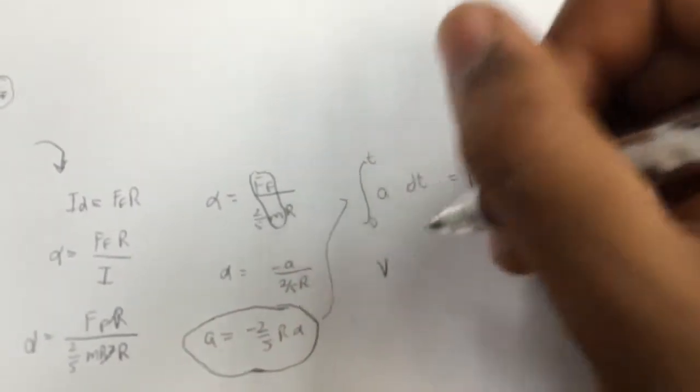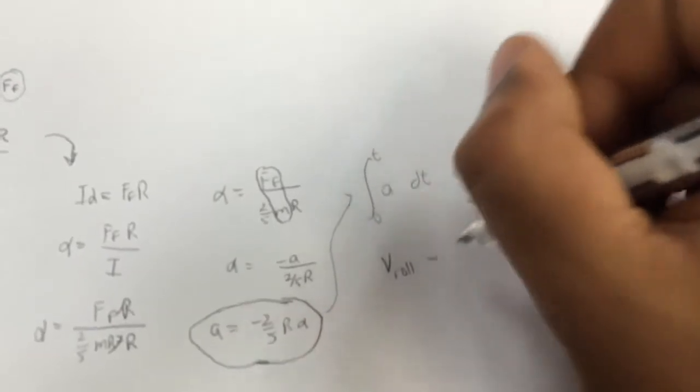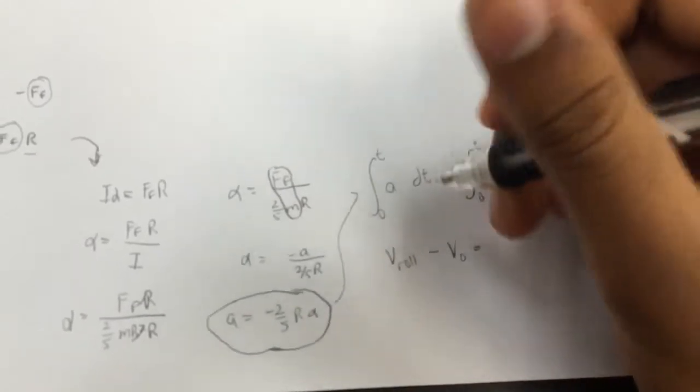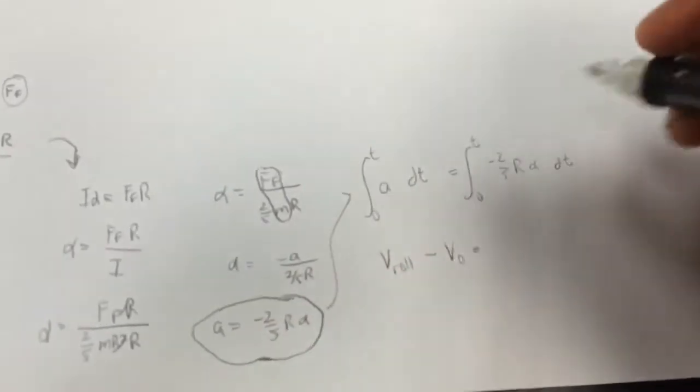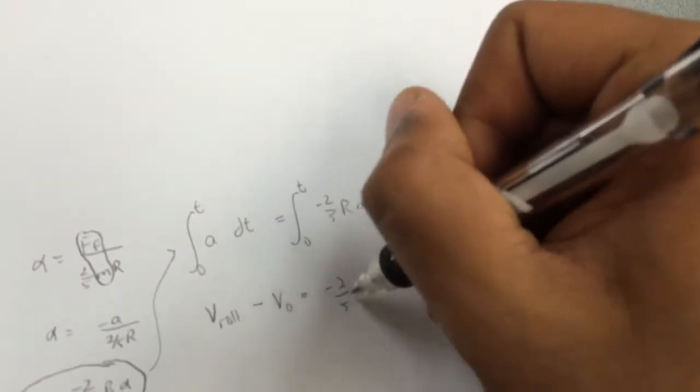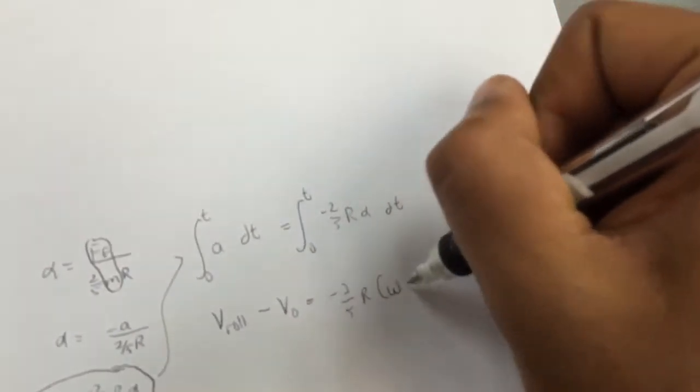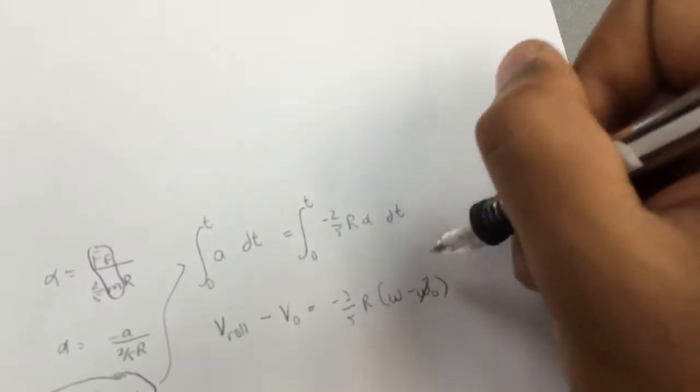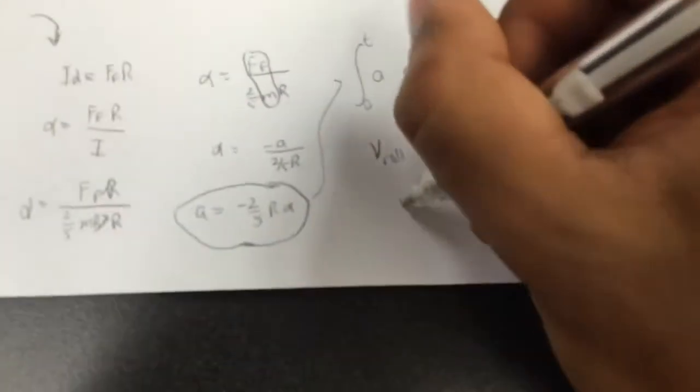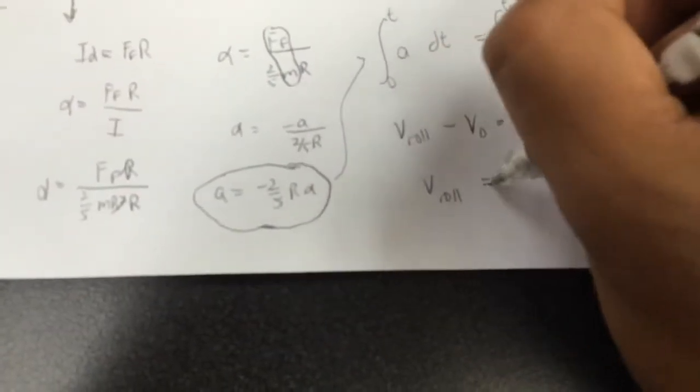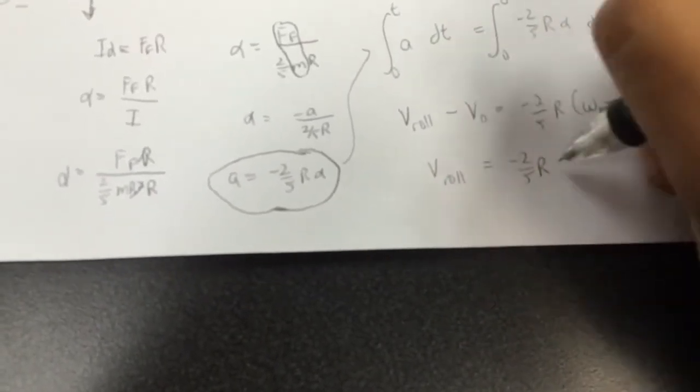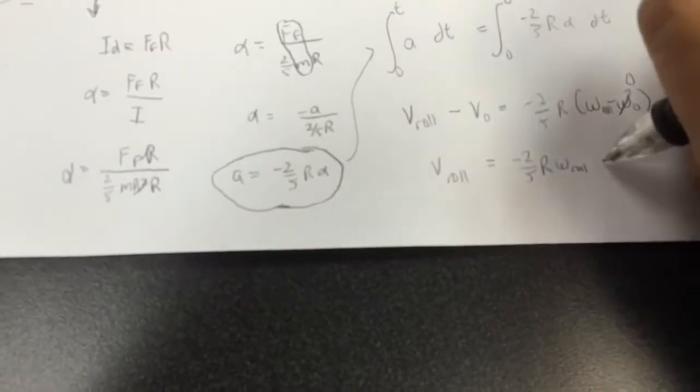So let's call our velocity at time t v_roll. And our velocity at time 0 is v_0. So this integral just simplifies to v_roll minus v_0 because it's the change in velocity from 0 to t. And here we have negative 2/5 r times omega minus omega_0. But omega_0 is 0 because it slides without rolling. So this is just 0. So we have v_roll is negative 2/5 r omega_roll plus v_0.